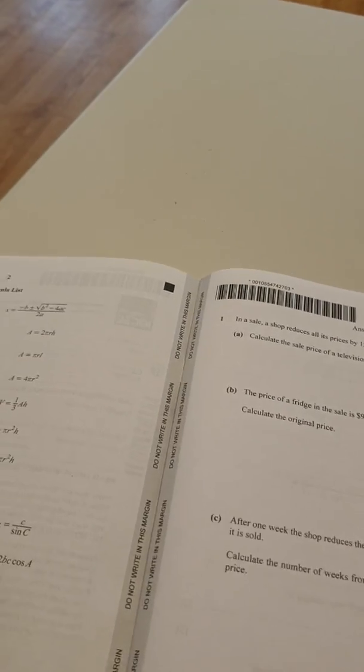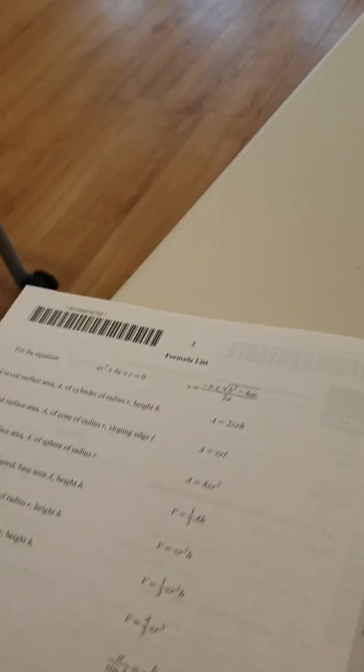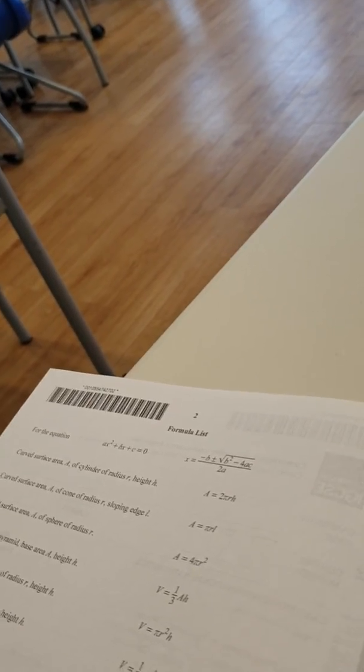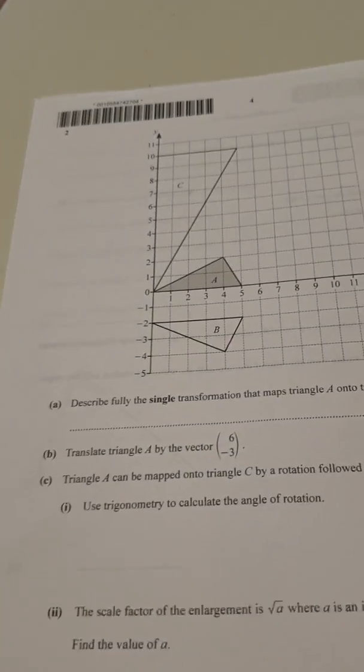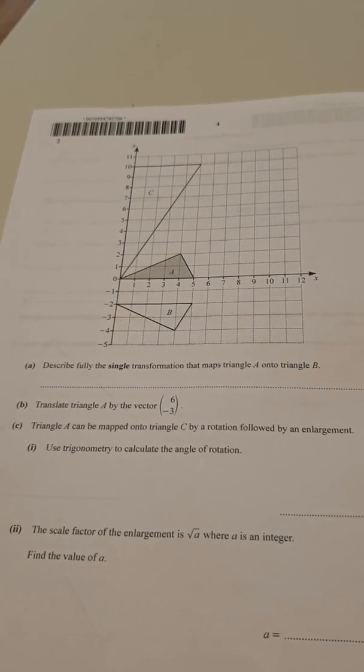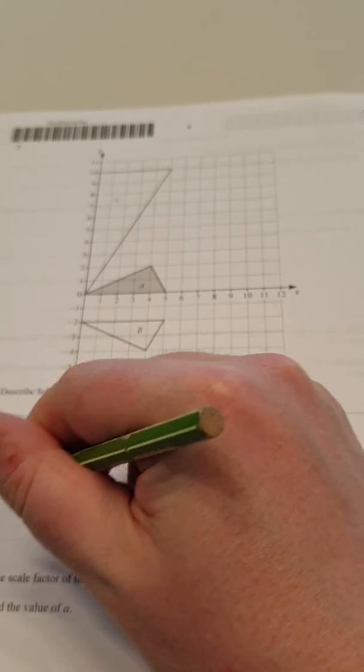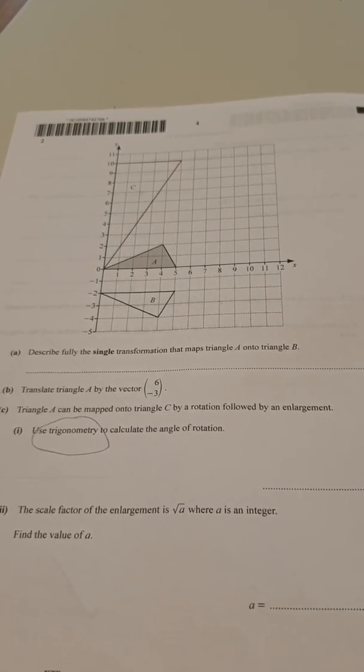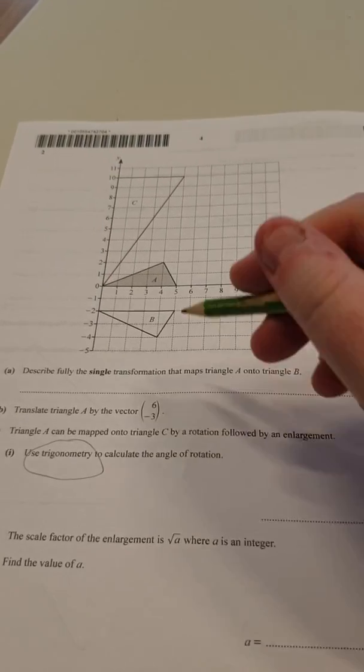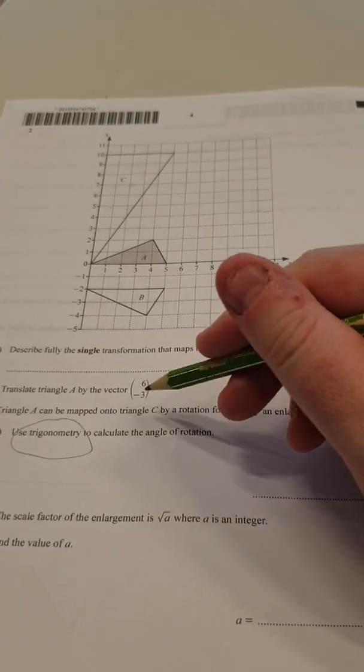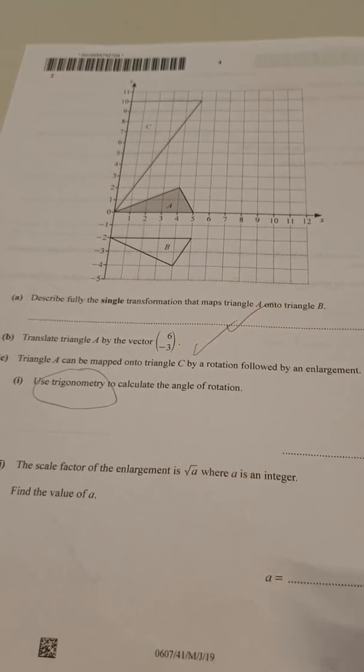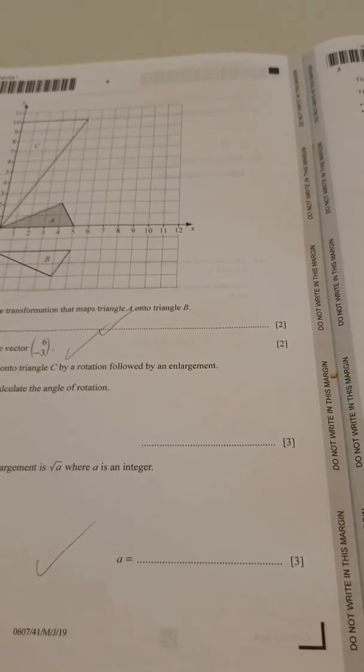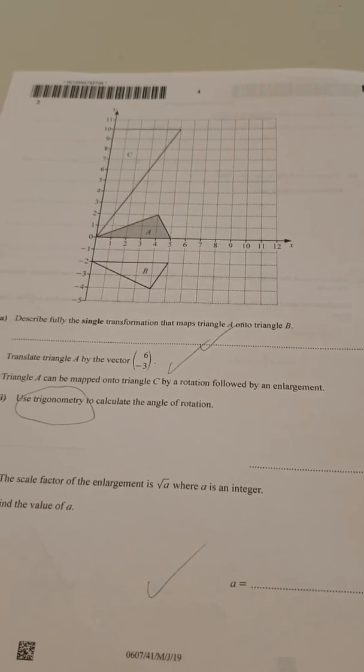So question two after that, so let's have a look at this next question. We don't want Q2 frequency just yet, there we are. So question two was a transformation question, as you can see. The only weird thing was using trigonometry to calculate the angle of rotation. I've never seen that before, but the other parts of the question are very standard. Describe fully the single transformation, that's normal. Translating, normal, and finding the scale factor is also normal. So mostly I predicted that question, and that will give you seven marks out of the ten if you revise the topics I mentioned.